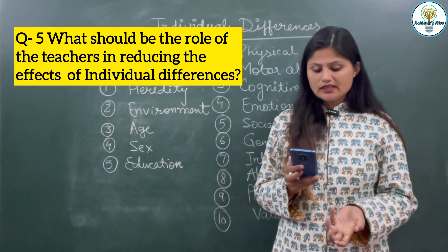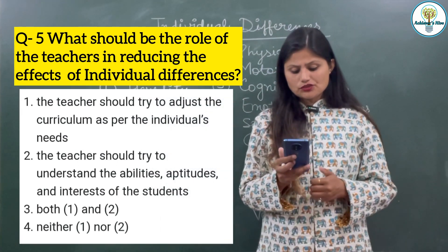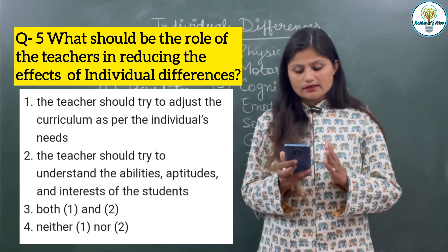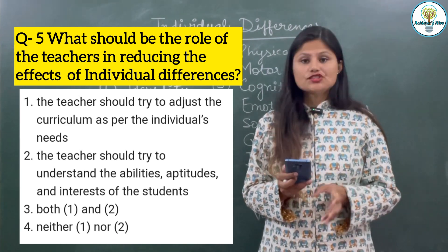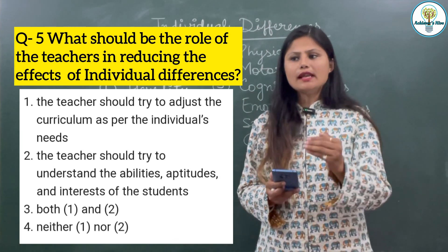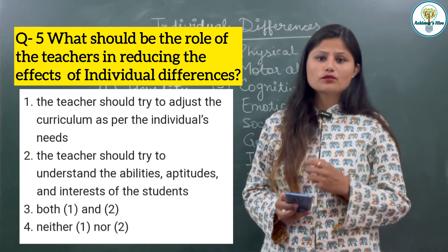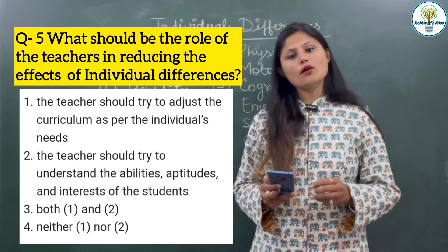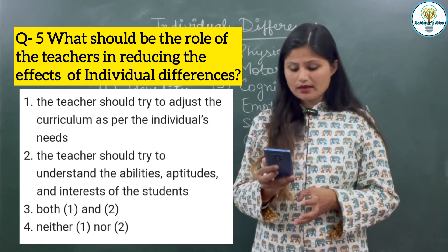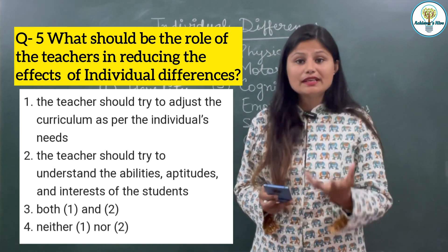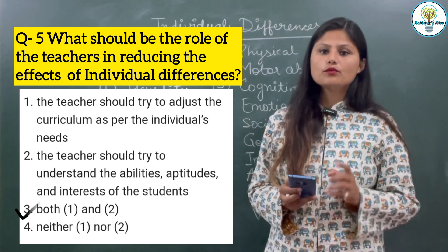What should be the role of the teacher in reducing the effects of individual differences? The teacher should try to adjust the curriculum as per the individual's needs. The teacher should try to understand the abilities, aptitudes and interests of the students. Both options are correct. Teachers need to frame curriculum according to the child's need and academic level. For example, if a child cannot solve a simple math sum, how will you teach them division or fractions? It won't make sense. You need to understand their emotional, cognitive, social abilities and potential, and teach accordingly. This way the individual difference effects can be reduced. So clearly both options are correct in this case.